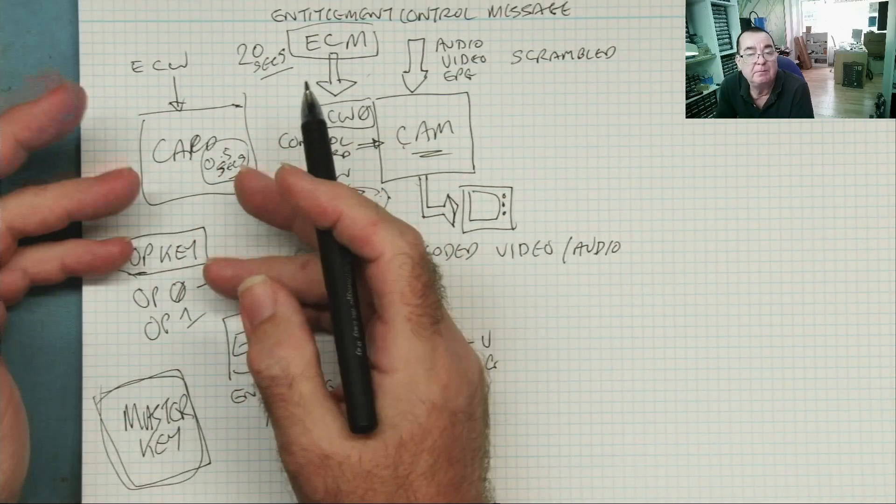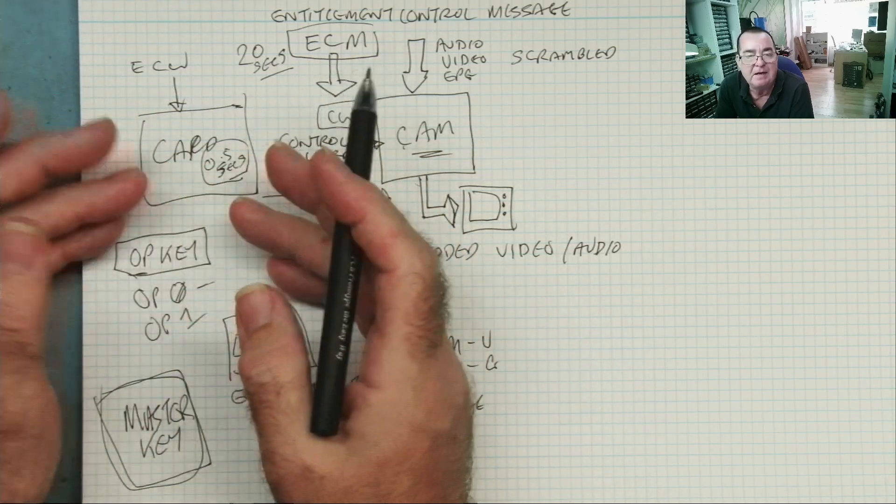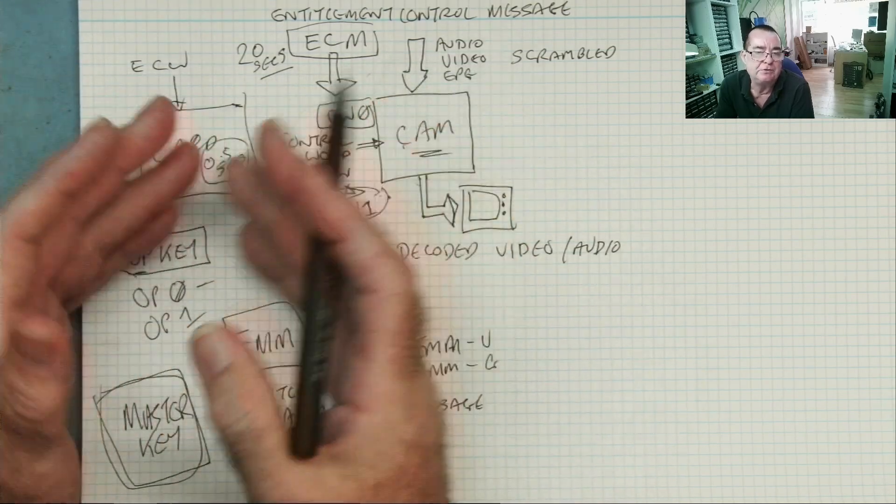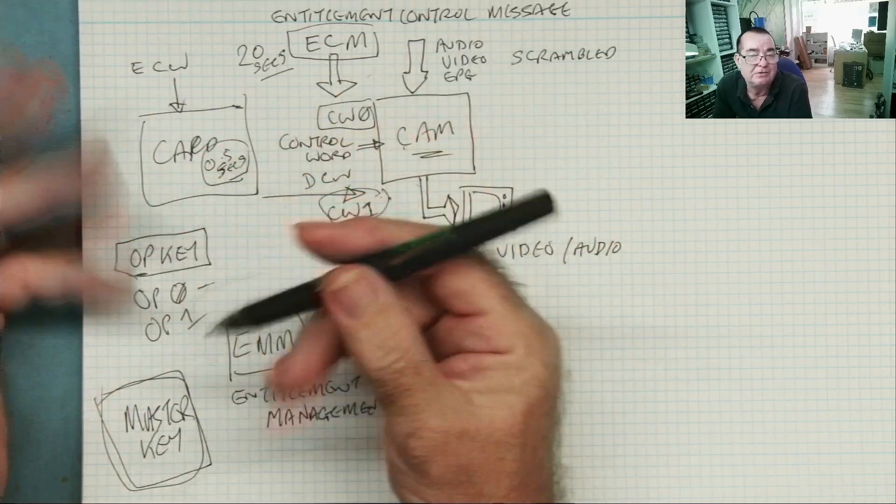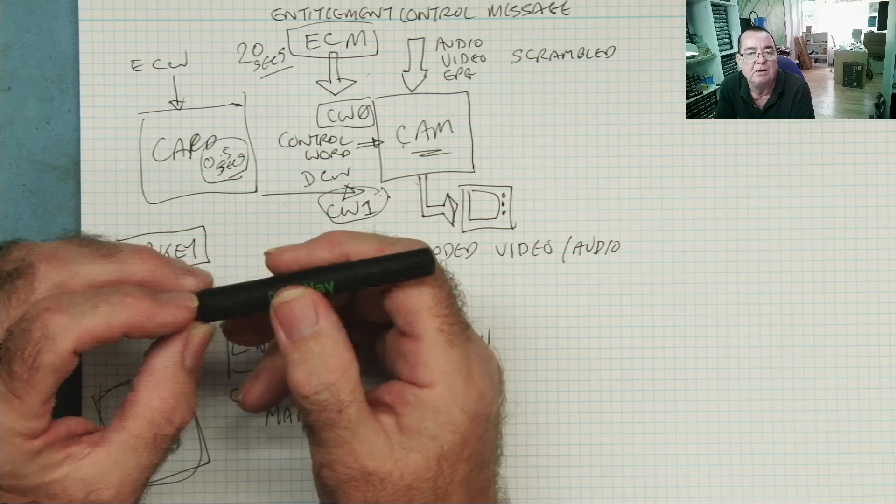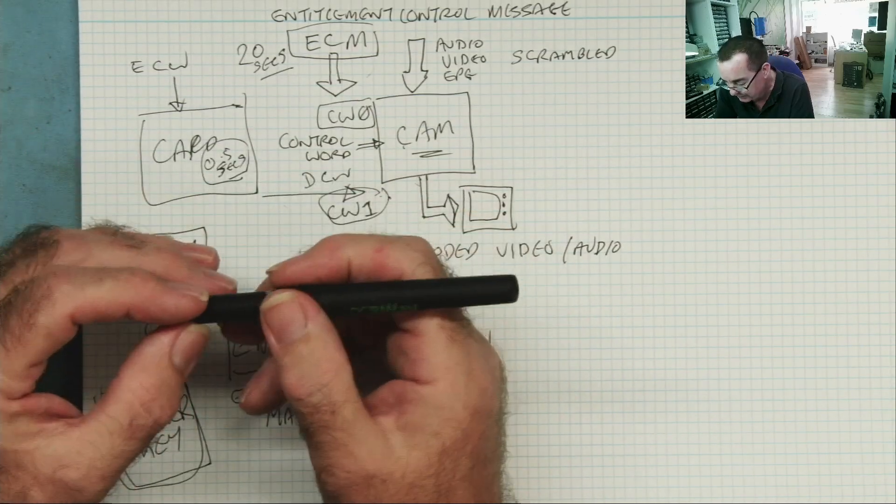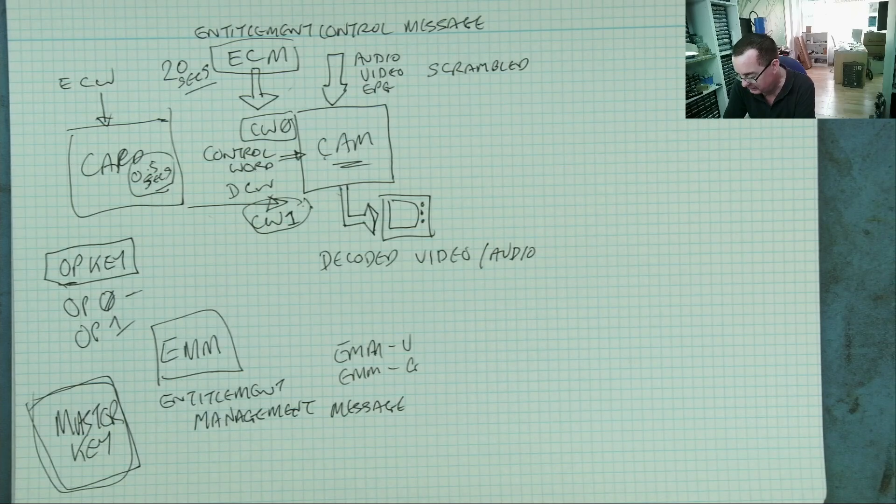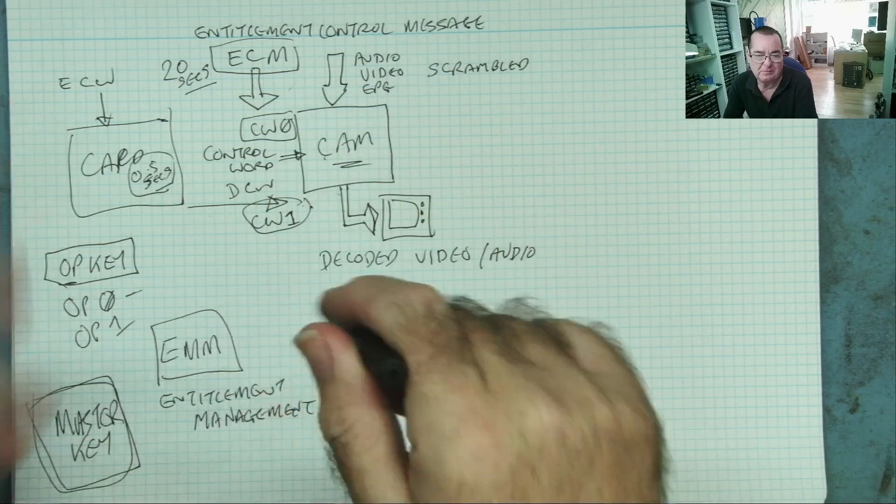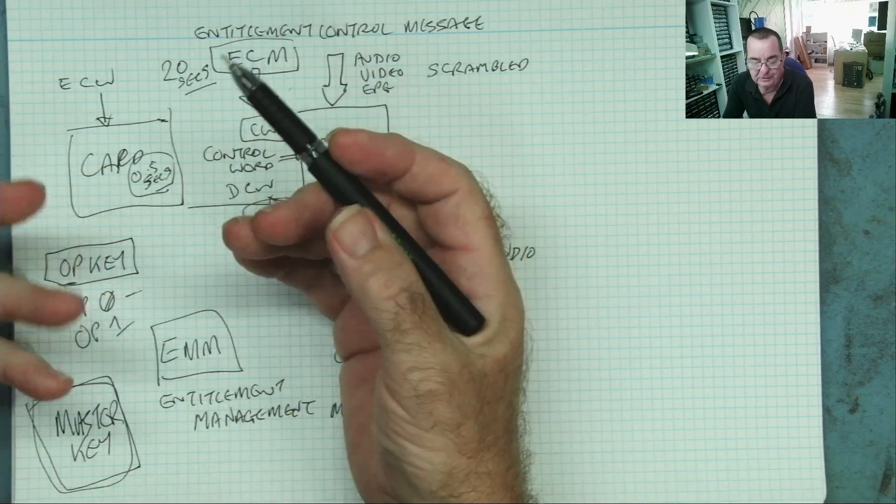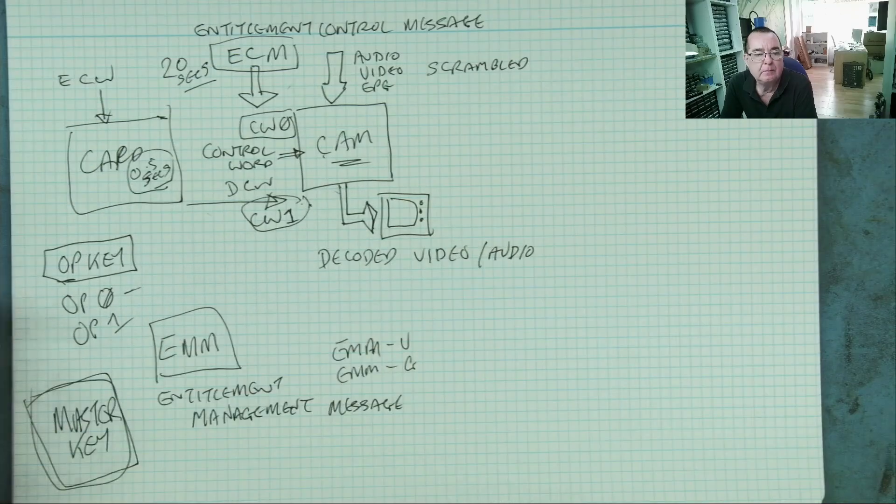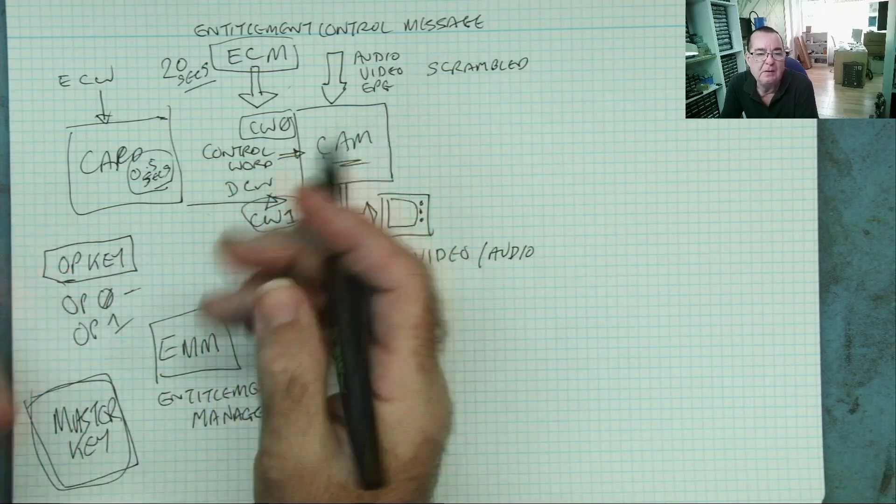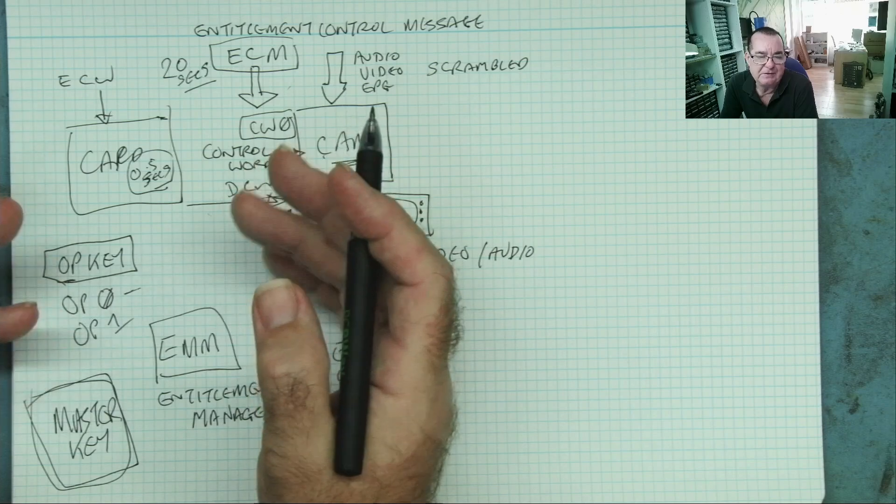The other one was glitching the card. At a certain point in the execution on the power sequence, you can drop the power for the length of one operation code and make the card do something else and effectively take it over. Hijack it. Obviously, over the years, these cards became more and more secure. They were doing clever things like putting variable frequency clock oscillators in them. So that the time it took to process an ECM was never the same. There was all sorts of things that went on.